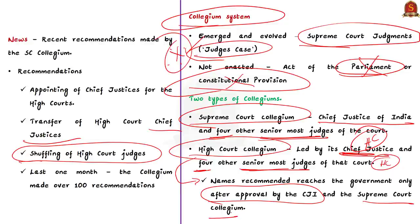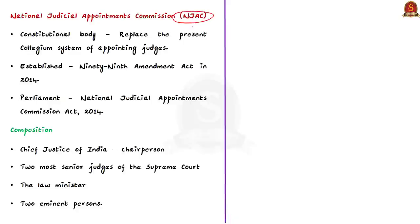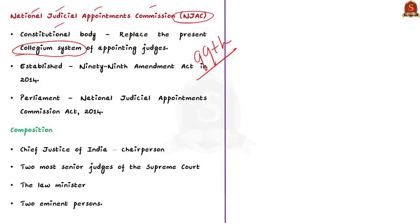When learning about the Collegium System, we should also know about NJAC — the National Judicial Appointments Commission. NJAC is a constitutional body. This body was proposed to replace the present Collegium System of appointing judges. It was established through the 99th Amendment Act in 2014. Remember this number — 99. After amending the Constitution, Parliament also passed a law called the National Judicial Appointments Commission Act 2014, to regulate NJAC's functions.